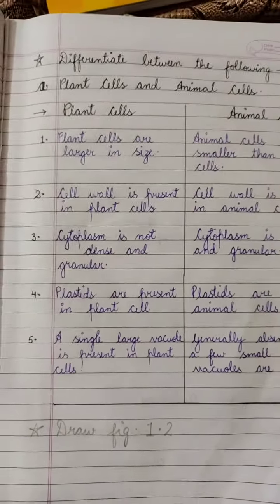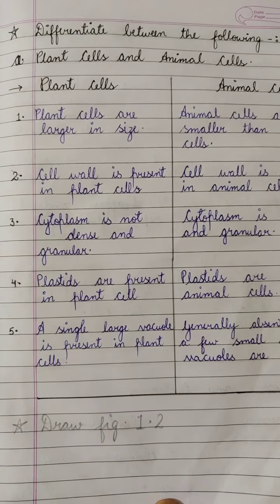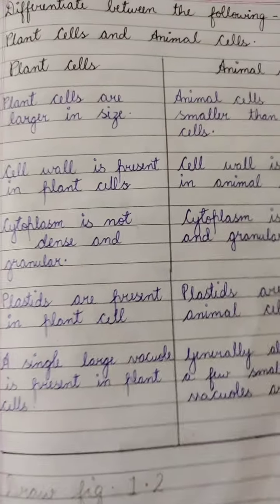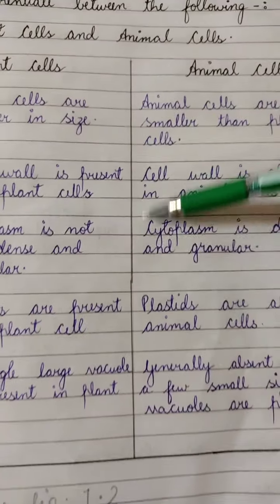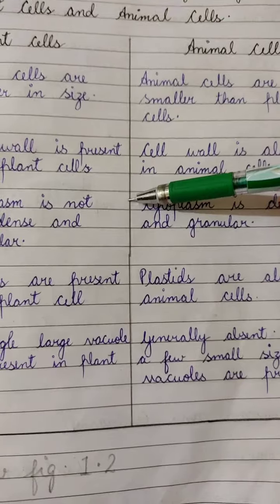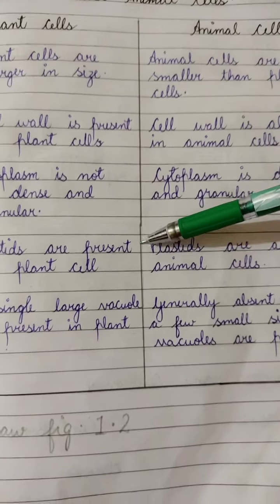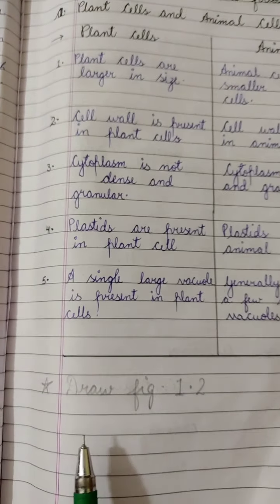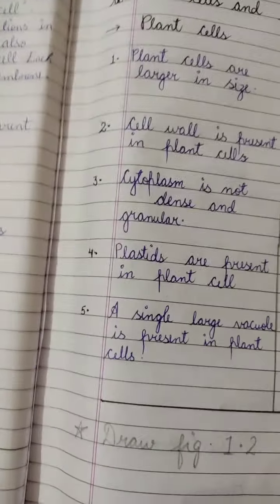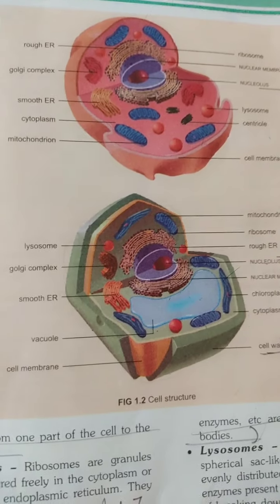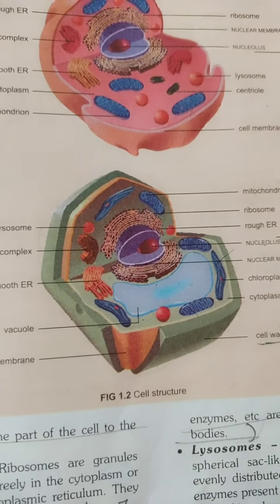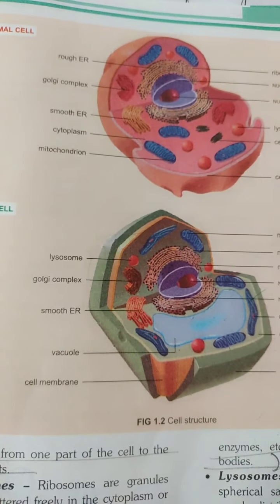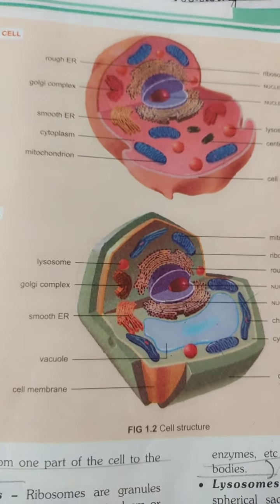After that you have to write the differentiate section. For the differentiation table you will use only pencil to divide — you will not use pen, you will use pencil. And in front of the plant cell and animal cell differentiation, you will draw figure number 1.2. You will draw this figure in front of differentiate between plant and animal cell.